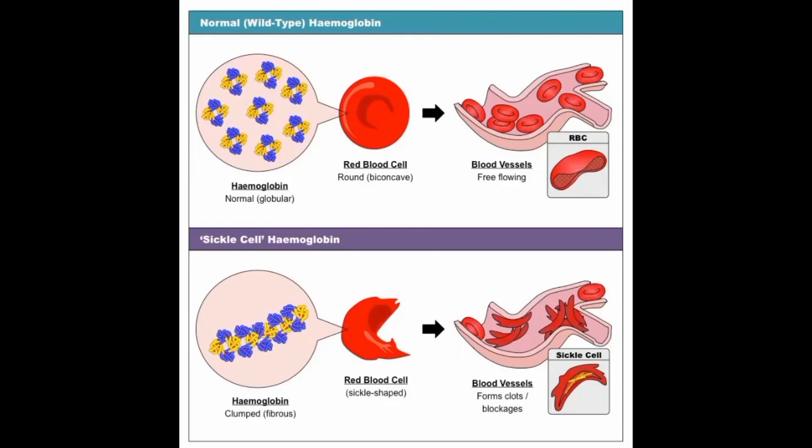Sickle hemoglobin C disease is a type of sickle cell disease that occurs when a person inherits one copy of the sickle cell gene and one copy of a different abnormal hemoglobin gene called hemoglobin C. People with HBSC produce both sickle hemoglobin and hemoglobin C in their red blood cells. While HbC is also an abnormal hemoglobin, it does not cause the same degree of sickling as HbS. As a result, HBSC is typically a milder form of SCD compared to sickle cell anemia, HBSS.